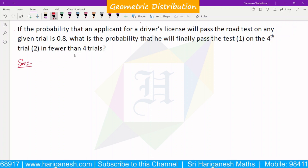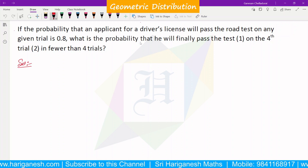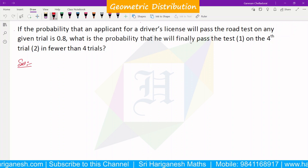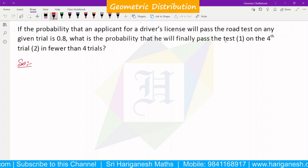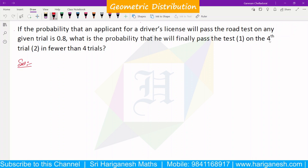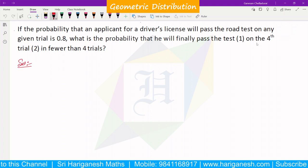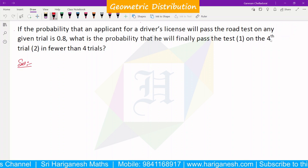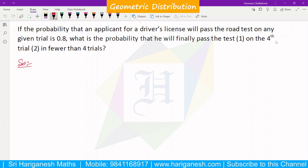First of all, how can you identify a geometric distribution? What is the probability that he will finally pass the test on 4th attempt? So, on the 4th attempt, the test will pass. Success will happen in the trial. Once you pass the test, you will proceed. So, this type of problem is geometric distribution.